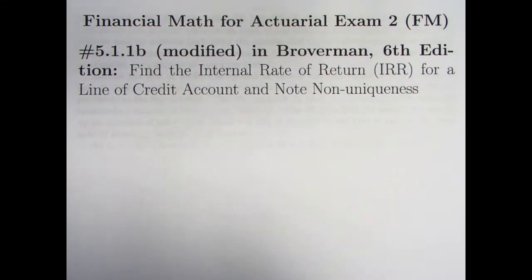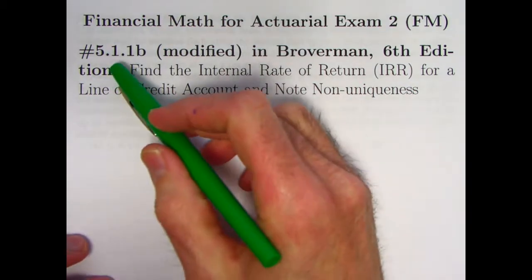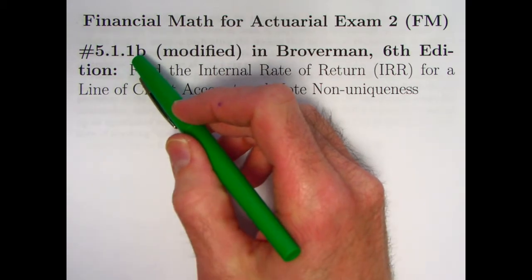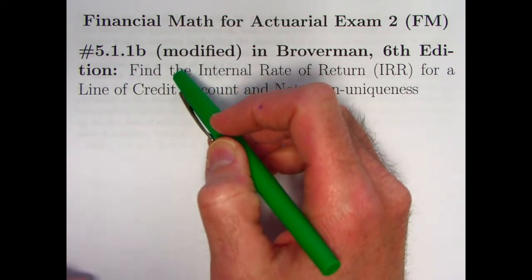In the last video, we started looking at problems from chapter 5 of Brogermann's book about trying to assess or measure rates of return, yield rates, on various kinds of investments that go beyond what we've done to this point. We're going to continue that in this video. We're going to look at problem 5.1.1, what you might call part B of that problem, though it's not stated that way in the book. And in fact, I've modified the problem a bit.